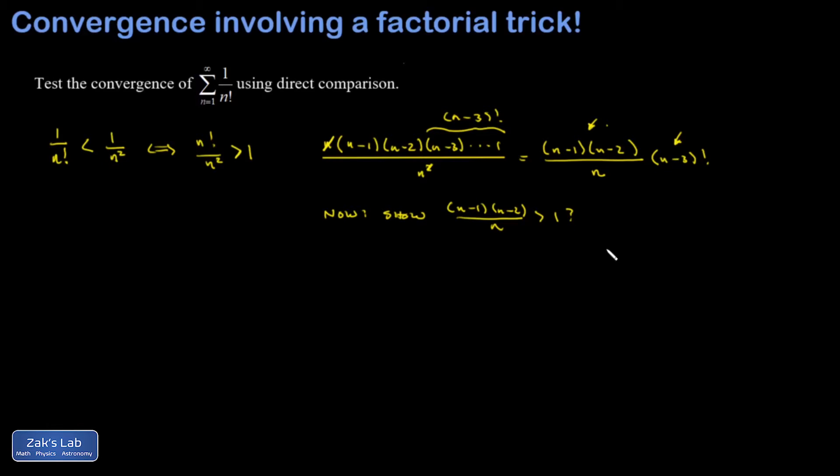And if I multiply both sides of that by n, that's equivalent to showing the n minus 1 times n minus 2 must be bigger than n at some point. And this seems really promising because that's like an n squared thing with a couple other terms in it. Of course, it's going to get bigger than n at some point.